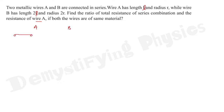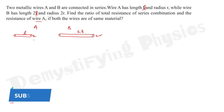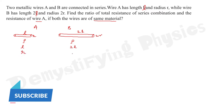The length of wire A is l and radius is r. The length of wire B is 2l and radius is 2r. Since the material is the same, the resistivity rho is the same for both wires.